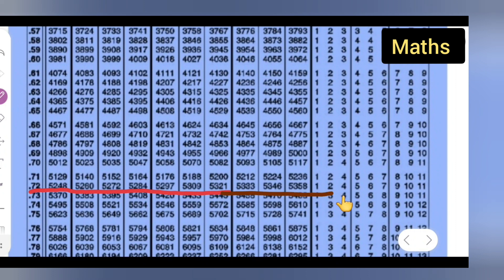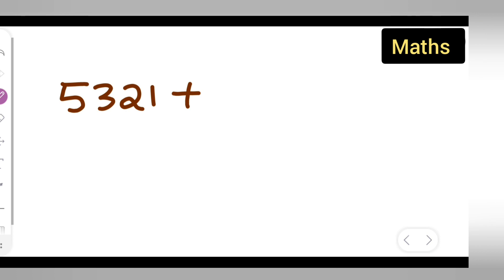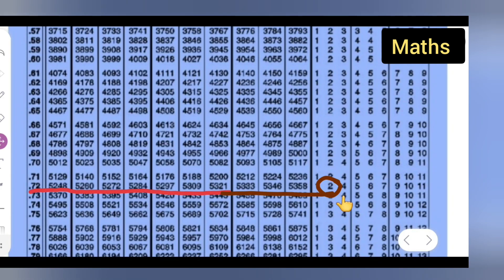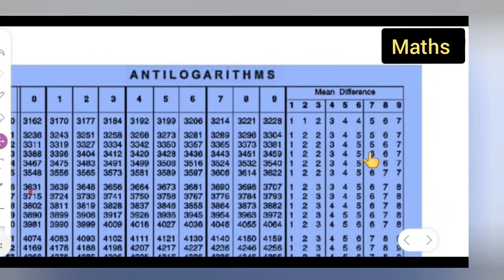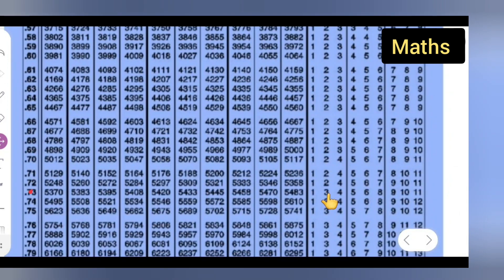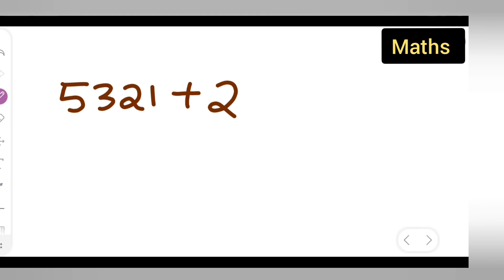So you have to add 2 to 5321. That gives you 5323. The main difference was found by checking column 2, giving the value 2. So adding: 5321 plus 2 equals 5323, which is your answer from the table.